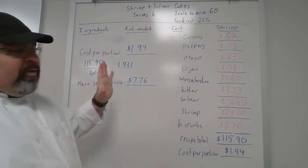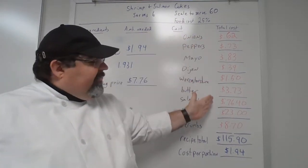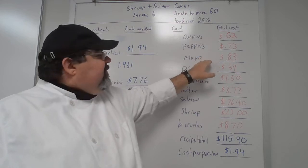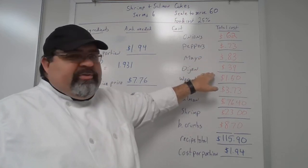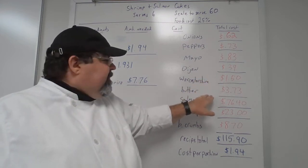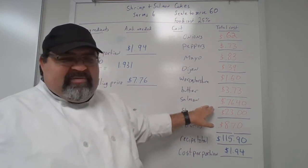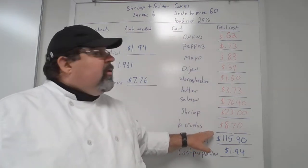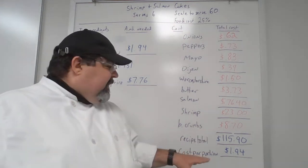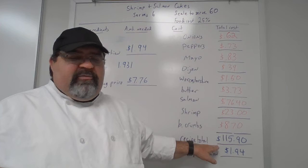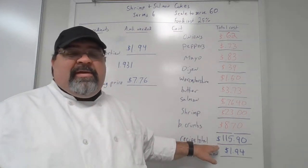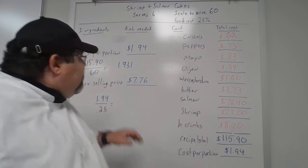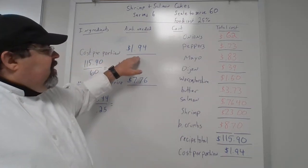Now that we've figured up all of our prices — the onions are $0.62, bell peppers $0.73, mayonnaise $0.83, Dijon mustard $0.39, Worcestershire sauce $1.50, butter $3.73, salmon $76.40, shrimp $23.00, breadcrumbs $8.70 — we add all those ingredients up to get a recipe total of $115.90. That makes 60 shrimp and salmon cakes, so divide $115.90 by 60 to get a cost per portion of $1.94.